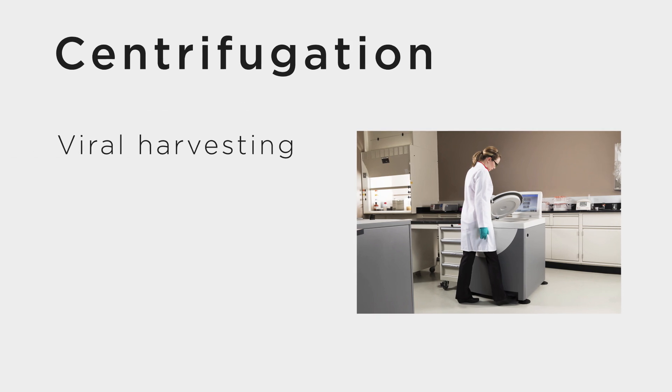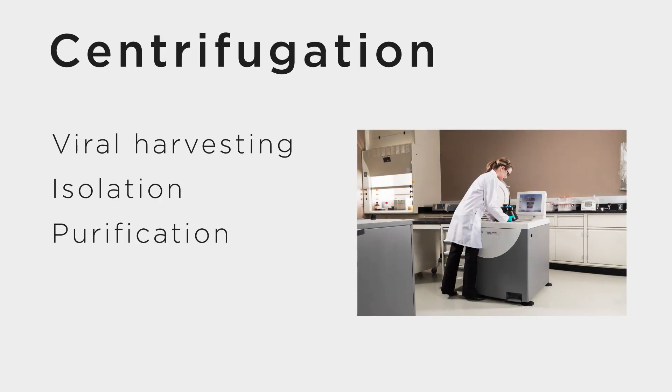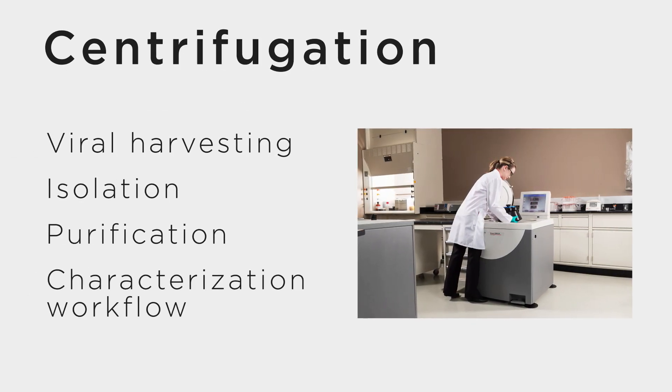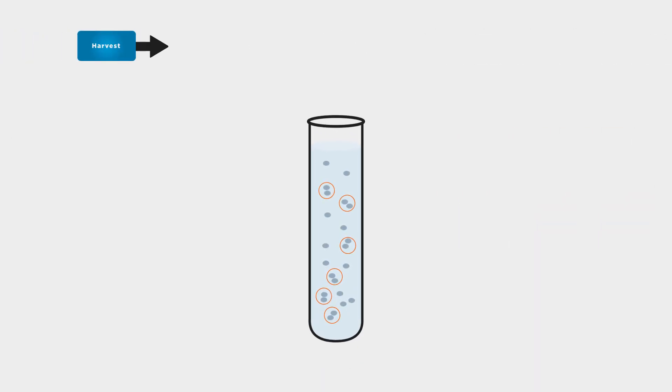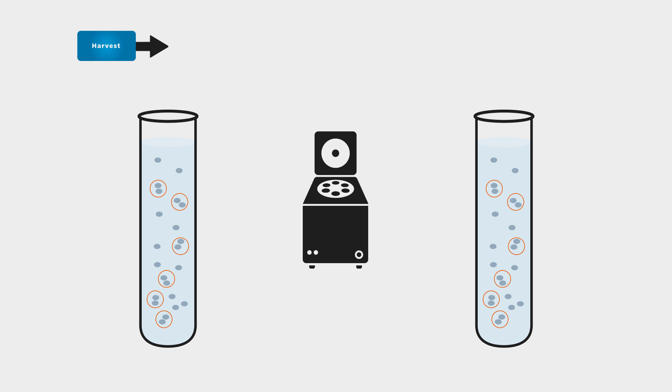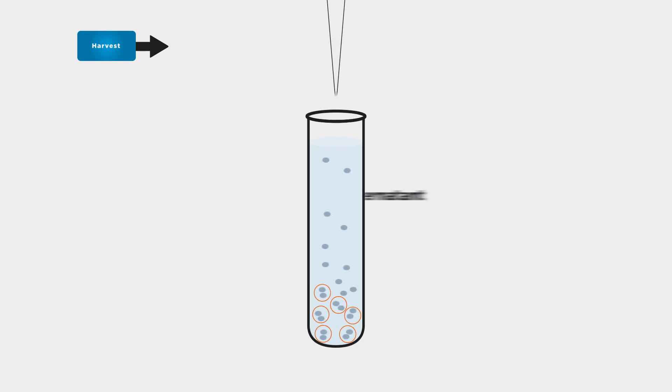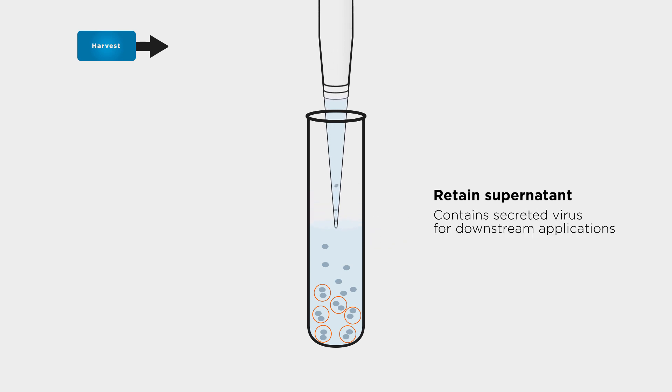Centrifugation can enhance your viral harvesting, isolation, purification, and characterization workflow. Following transformation and cellular viral amplification, cells are subjected to a low-force centrifugation step to separate soluble virus from cells containing virus. Remember to retain the supernatant as well, which contains secreted virus that can be purified for downstream applications.